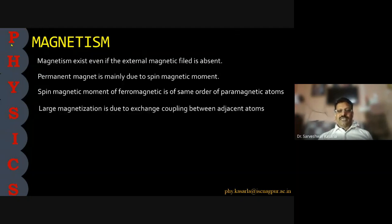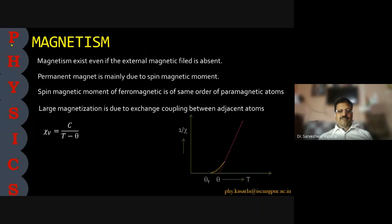The large magnetization is due to the exchange coupling between adjacent atoms, which we will see in the next slides. The paramagnetic susceptibility is equal to C upon (T minus theta), where T is the absolute temperature.